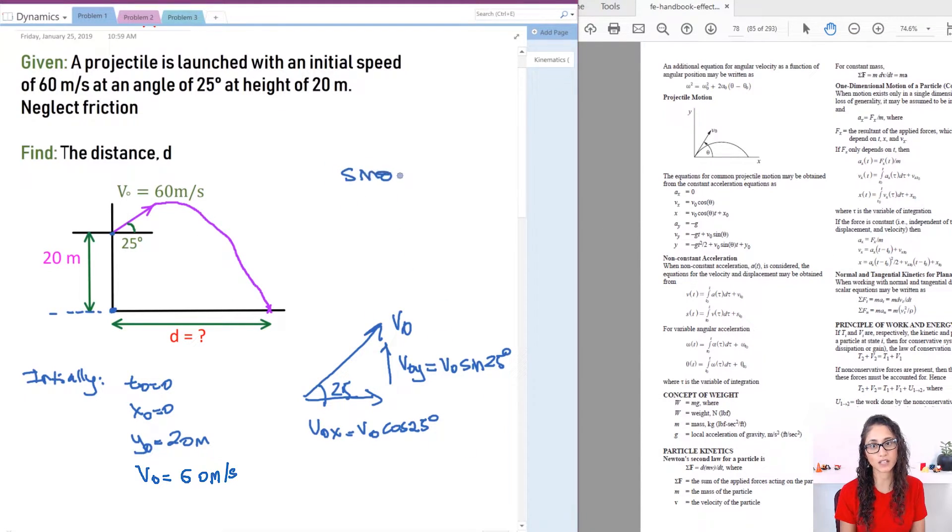So just remember this. Sine theta is usually equal to the opposite over hypotenuse and cosine theta is equal to the adjacent divided by the hypotenuse. This is why we use cosine here and this is why we use sine here.